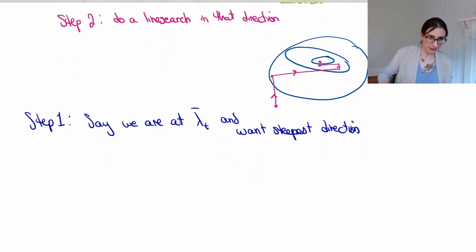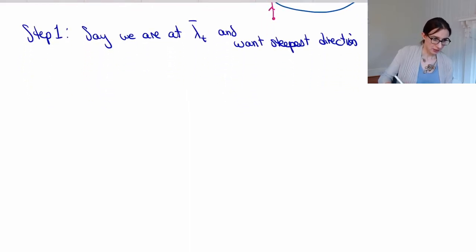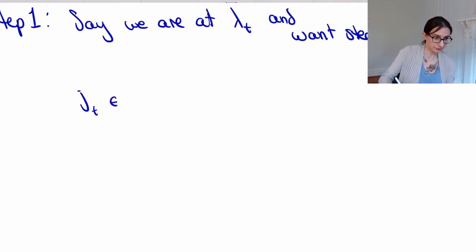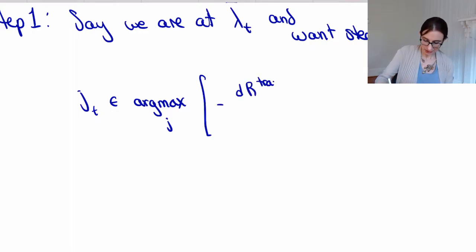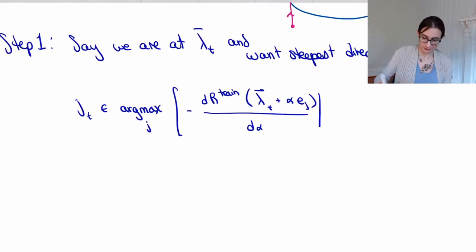So I can write the formula for the steepest direction down. So it's j_t in argmax, which means find the maximum over all j of the following quantity. So it's negative, and then it's dr train because that's the objective we're optimizing, is r train. And then this is lambda t plus alpha e_j, d alpha.